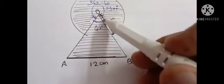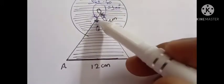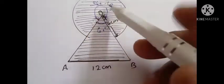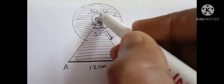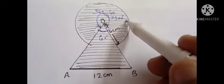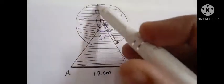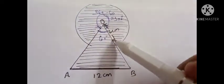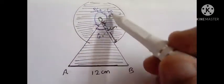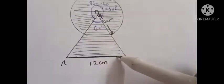The total angle around the point is 360. This much is 60, so the remaining will be 360 minus 60, that is 300 degrees. So we have to find the area of this major sector.